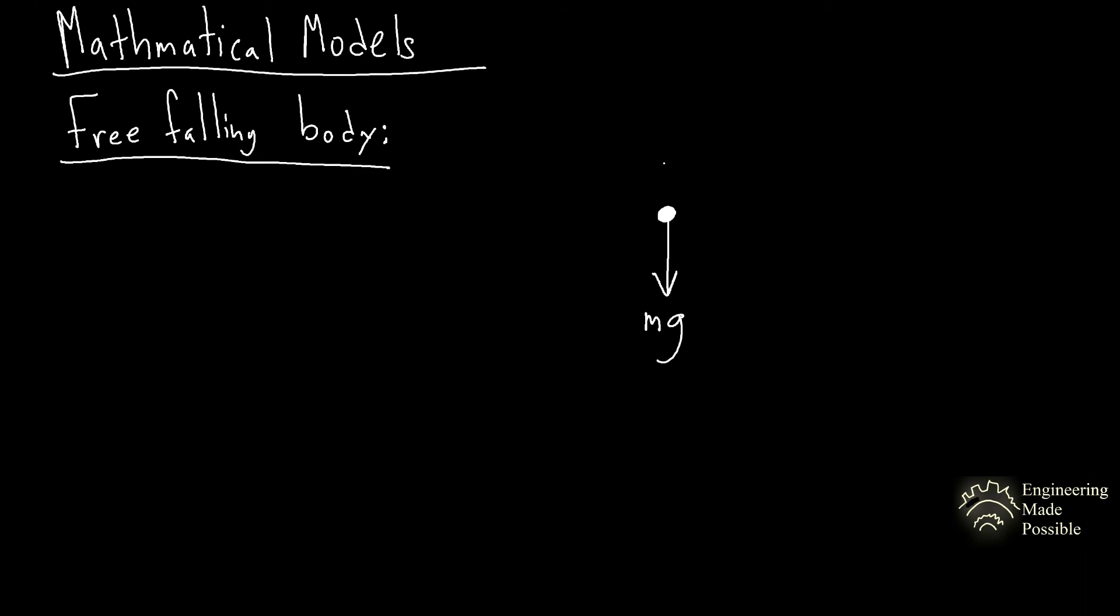So let me go ahead and draw that. So of course, a free-falling body, you have weight pulling it down, but of course, you have air resistance resisting that movement, which is a k constant times the velocity squared in this case.